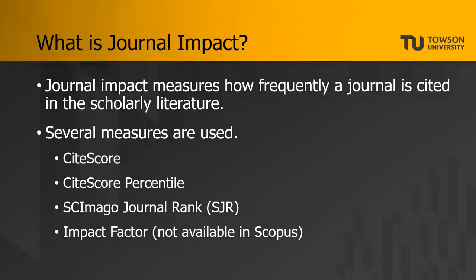Finally, there's Impact Factor. Impact Factor measures the average number of citations received by a journal in the past two years divided by the total number of articles published in that journal during that time frame. Impact Factor is only available through a database called Web of Science, which we do not have access to at Towson because it's prohibitively expensive. I mention it here because it's a popular metric you might encounter throughout your studies, but it's very similar to these other metrics — they're all just different ways of measuring the same thing.